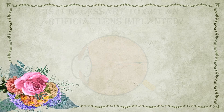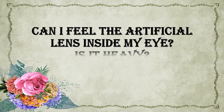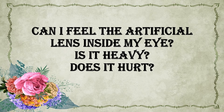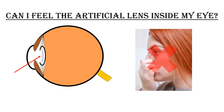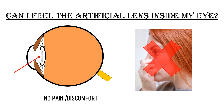Can I feel the artificial lens inside my eye? Is it heavy? Does it hurt? The artificial lens is placed inside your eye — it is not like a contact lens placed on the surface. The part of the eye where the artificial lens is implanted has no nerves, so you cannot feel the lens at all. It does not cause any pain or discomfort.